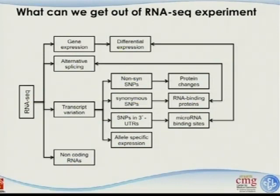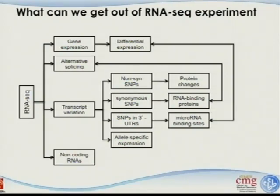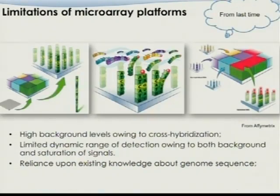As a summary, RNA sequencing can give us gene expression and differential expression, alternative splicing, and transcriptome variation including non-synonymous variation, synonymous variation, variations on the 3-prime UTR, and allele-specific expression. Synonymous variation can disrupt RNA binding and protein binding, affecting alternative splicing. Variations on the 3-prime UTR — which you can identify in RNA-seq data — may affect microRNA binding sites and thus differential expression. RNA-seq also provides non-coding RNA profiling, which is hard to do on arrays because we don't know where those non-coding RNAs are.